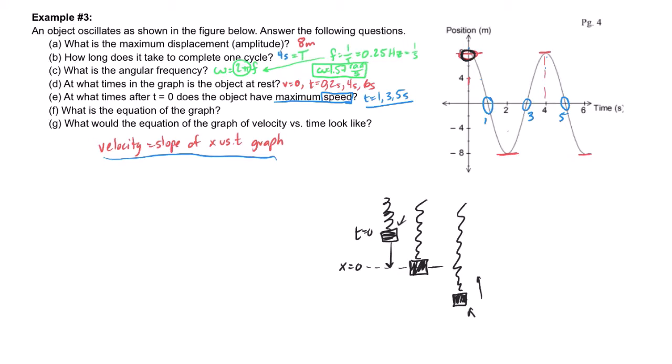Now, letter F is our first semi-difficult question here where it actually asks us to find the equation of the graph. Now, you may remember that one of the equations in your formula packet is x equals a cosine 2 pi f t. That's when it's position versus time. Simple harmonic motion. Now, 2 pi f, remember, is the angular frequency, which is what we did up here in letter C. And so, therefore, we can find the answer to letter F here by just saying that x equals the amplitude, which was our answer to letter A.